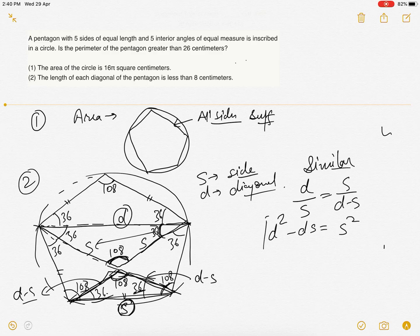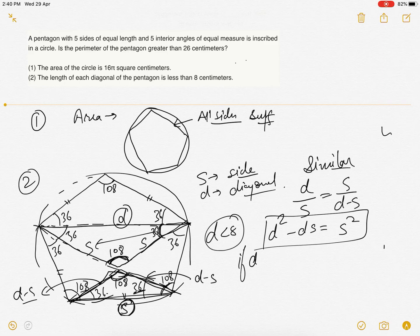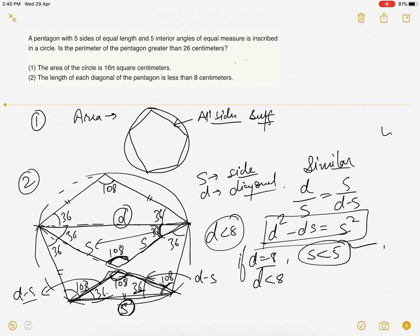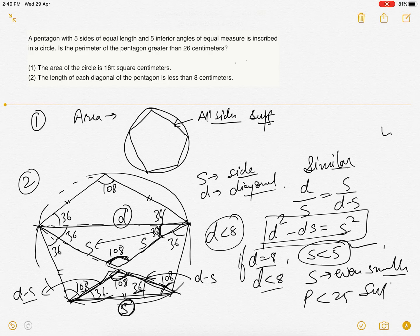Now it says every diagonal is less than 8. If diagonal equals 8, we get s is less than 5. If s equals 5, this equation won't hold true. Now given d is less than 8, s would be even smaller, and the perimeter would be less than 25. So this statement is also sufficient. Thank you.